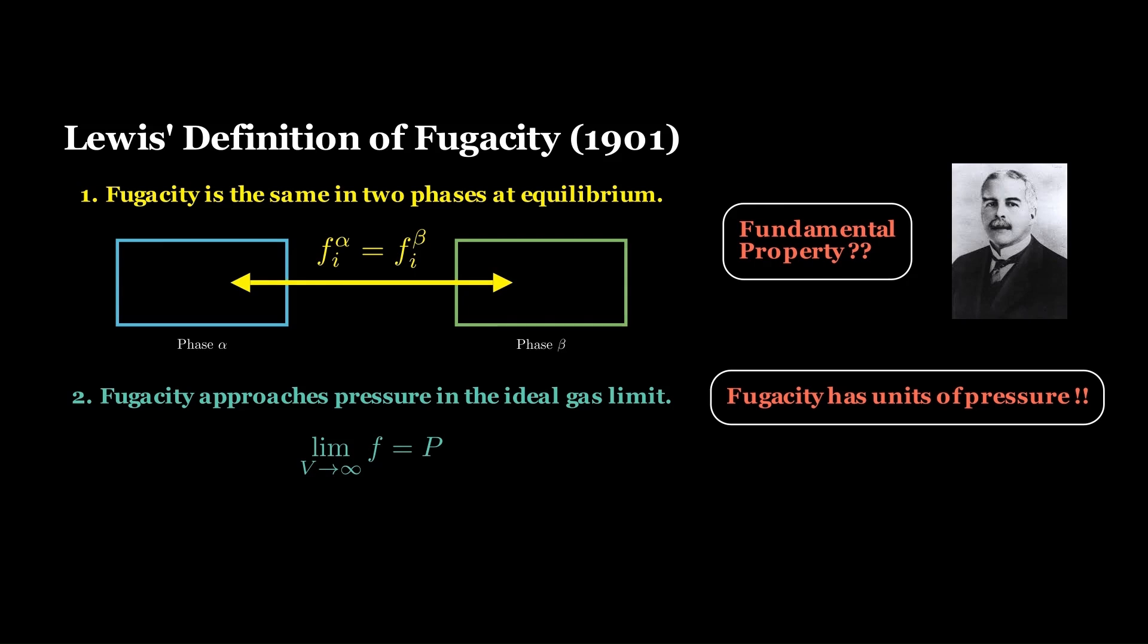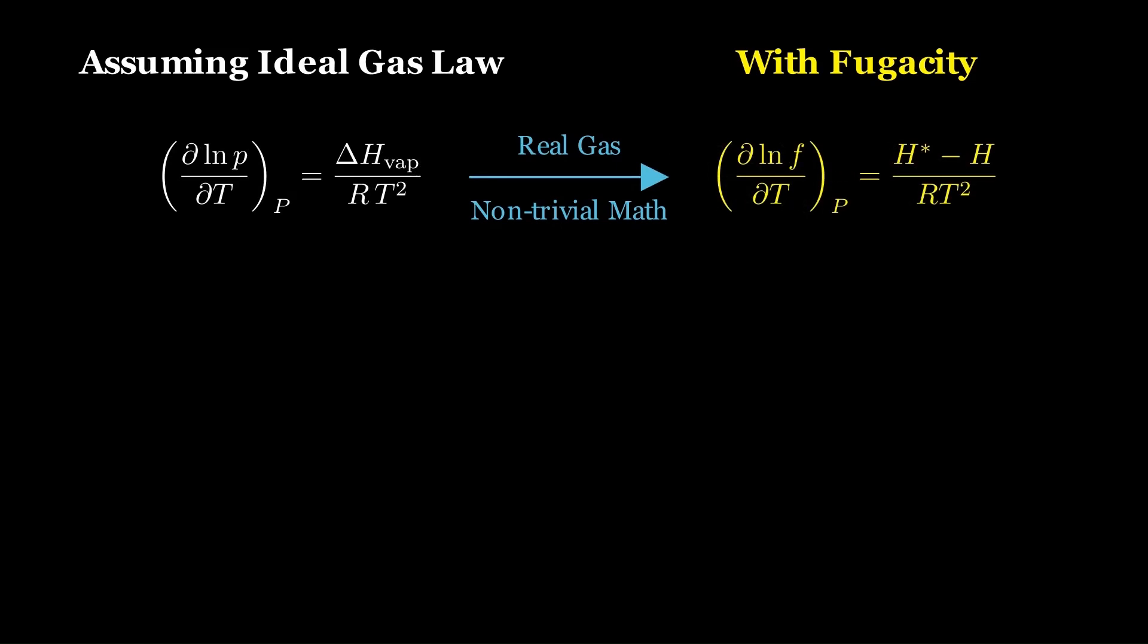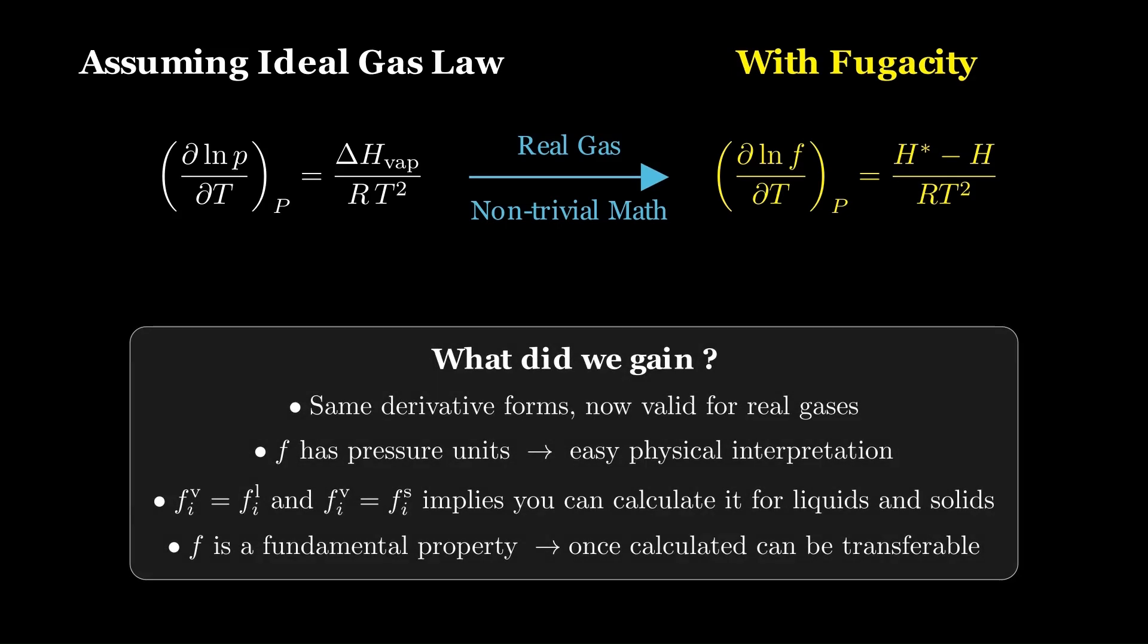Before we delve into those issues, let's quickly look at the usefulness of the concept. Revisiting the Clausius-Clapeyron equation we introduced before, which is derived under the assumption of ideal gas behavior. By replacing pressure with fugacity, Lewis obtained equations of similar mathematical form that remain valid beyond the ideal gas limit. Arriving at this result without invoking the Gibbs equation is mathematically non-trivial. The strength of fugacity lies in this consistency. It preserves familiar differential relationships while extending their applicability to real gases.